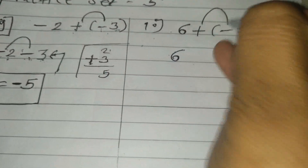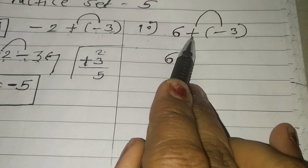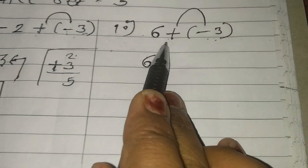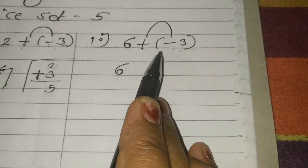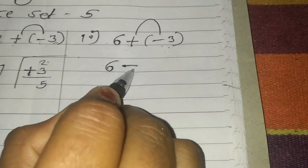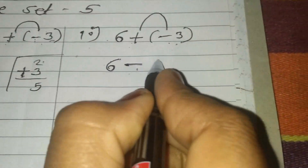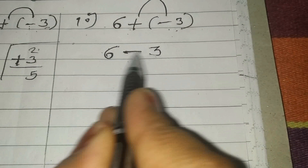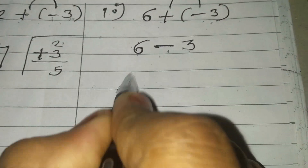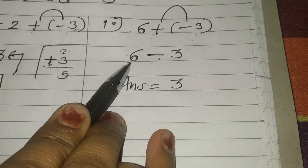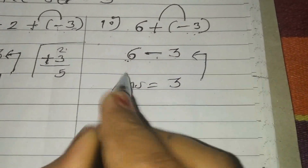Different sign — plus and minus — so say as usual: different sign subtraction. The middle sign will be subtract and the next number as it is. Now do the subtraction: big number minus small number. Big number is 6 — 6 minus 3 is 3. In the 2nd step, big number is 6.